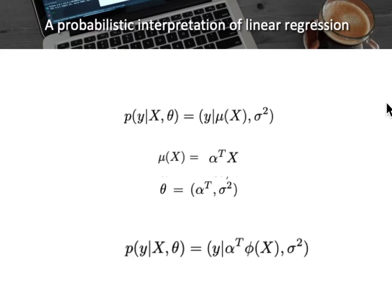An advantage of the probabilistic interpretation is that for nonlinear relationships we can simply replace the feature vector x with a transformation phi(x). This leads to replacing x with the transformed input, and the interesting point is that while this function may not be linear with respect to x, it is still linear with respect to the parameters — in particular, the weight vector alpha.